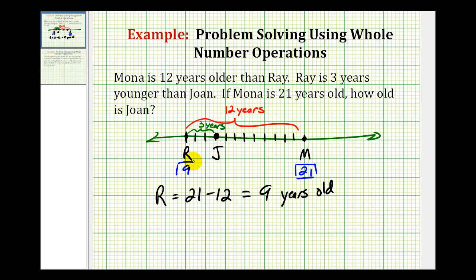So if Ray is nine, and Ray is three years younger than Joan, Joan would be Ray's age, which is nine, plus three. So Joan is twelve years old.